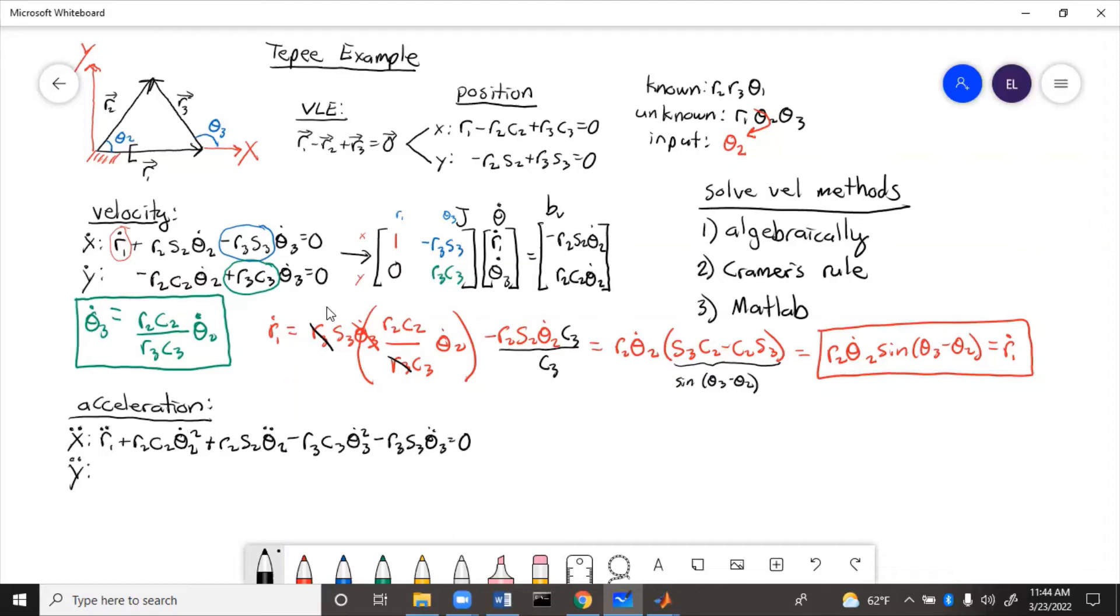So note here that from the theta dot equations for velocity, we got two different derivatives. We got the theta dot squared and the theta double dot, and that's because we have to use product rule and chain rule because both the angle and the angular velocity can change.